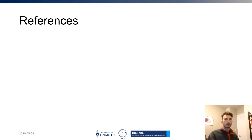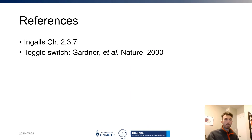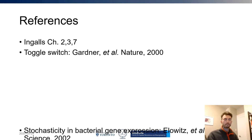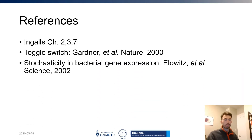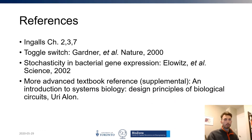The references for all four modules include Brian Engel's textbook chapters 2, 3, and 7. If you'd like a copy, I refer you to the references slide of module 1, which includes a link to download it. In part 3, I'll reference Gardner et al., published in Nature in 2000, which introduces the Collins toggle switch. In part 4, I'll reference Elowitz et al., published in Science in 2002. A supplemental advanced textbook is An Introduction to Systems Biology and Design Principles of Biological Circuits by Yuri Cohen.